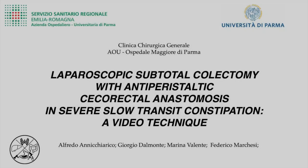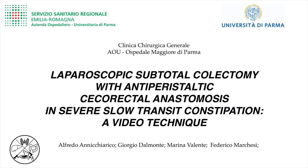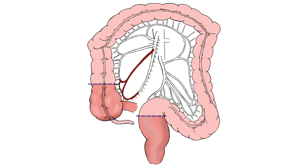We present our technique to perform a laparoscopic subtotal colectomy with anti-peristaltic cecorrectal anastomosis for severe slow transit constipation. The procedure involves the preservation of the rectum and cecum along with the ileocolic vessels.